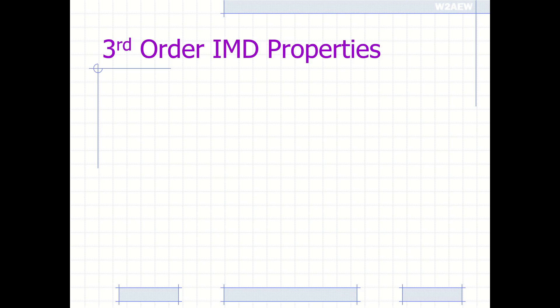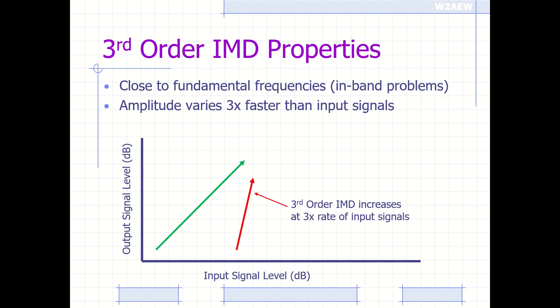A couple other properties of third-order intermodulation distortion: they lie close to the fundamental frequencies, which can cause in-band problems. Also, their amplitude varies three times faster than the input signals, meaning as the input signal power is raised, the third-order power raises up at a rate that's three times faster.